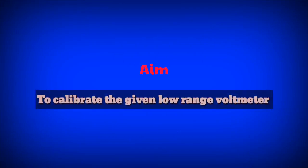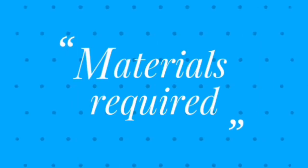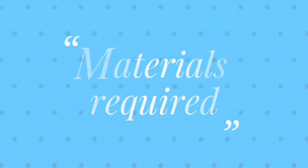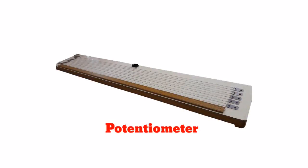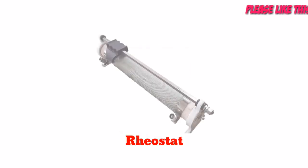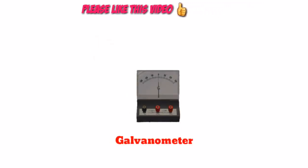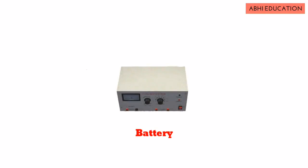Aim: to calibrate the given low-range voltmeter. Apparatus: Potentiometer, voltmeter, rheostat, galvanometer, Daniel cell, battery, switch.